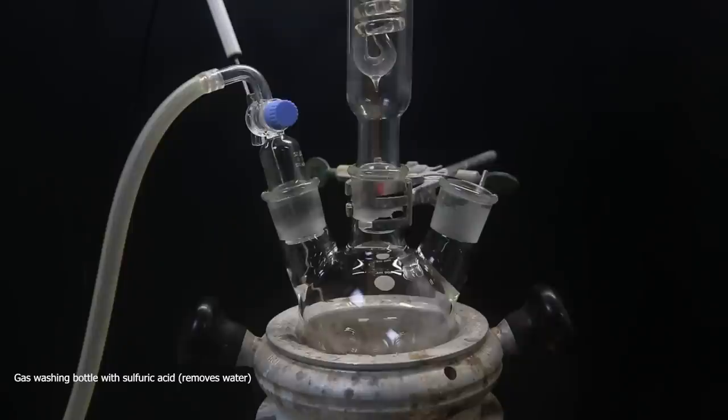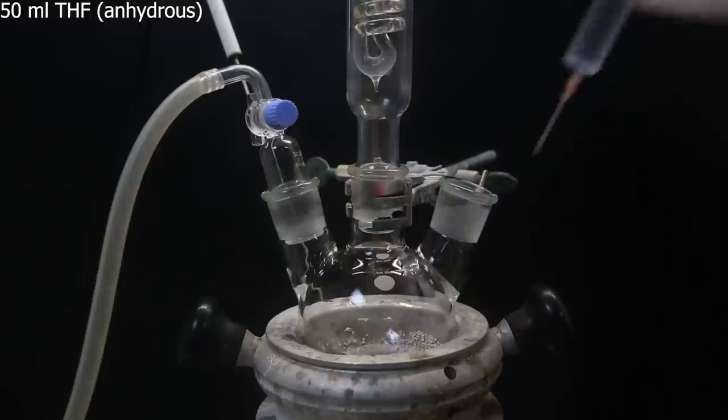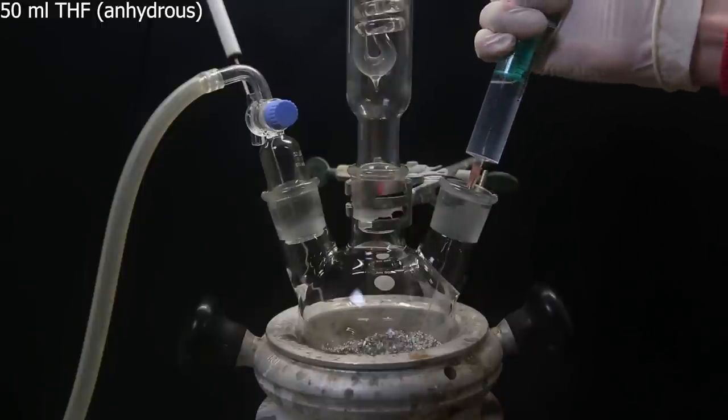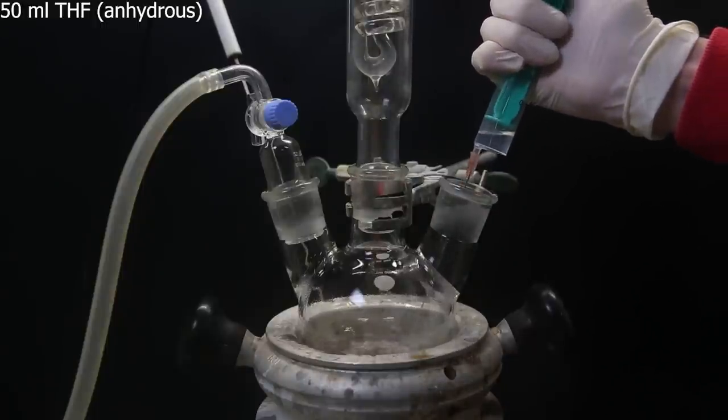Bubbling the nitrogen through the sulfuric acid will make sure that the stream is dry, and I let it blow constantly through the setup. I attach a funnel and then add in 5.5 grams of magnesium turnings. Then with a syringe, I add in 50ml of anhydrous THF, because the reaction will only work if the solvent is dry.